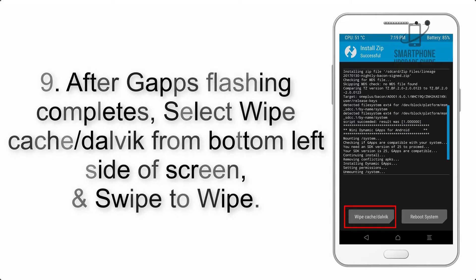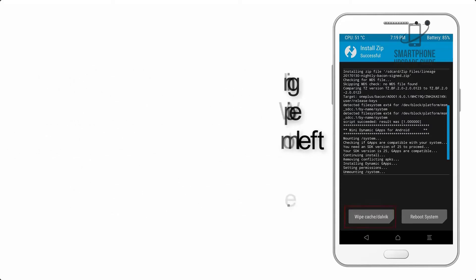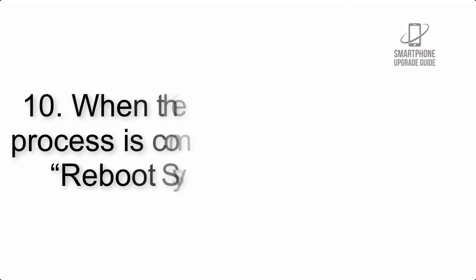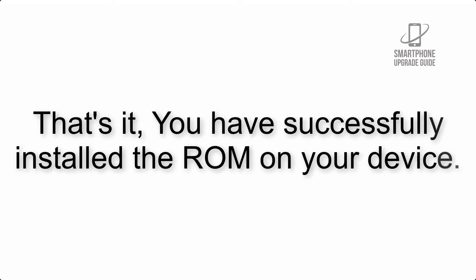Step 8: Flash the GApps zip package in the same manner. Step 9: After GApps flashing completes, select Wipe Cache and Dalvik from the bottom left side of the screen and swipe to wipe. Step 10: When the flashing process is complete, hit Reboot System. That's it — you have successfully installed the ROM on your device.